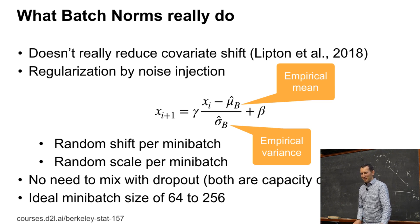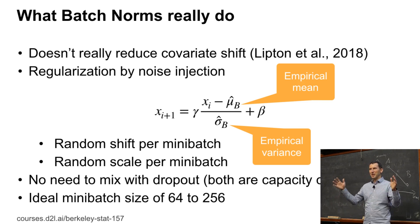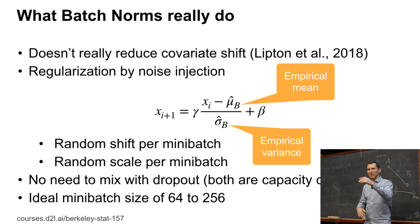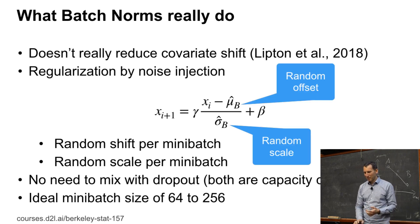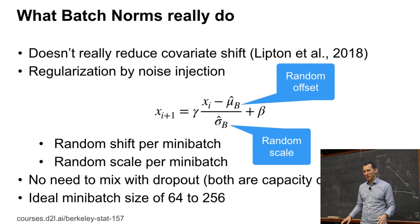But it works, and we'll see that afterwards. It actually turns out that batch normalization is doing regularization by noise injection. Because you compute a mean and a variance on a mini-batch — a mini-batch of maybe 64 or 128 observations. What you're effectively doing is subtracting some empirical mean, which is obviously noisy, and dividing by some empirical standard deviation, which is also obviously noisy. So you're basically getting a random shift and a random scale per mini-batch. This is one of the reasons why if you use batch normalization, you really don't need dropout nearby, because they do similar things in terms of capacity control.